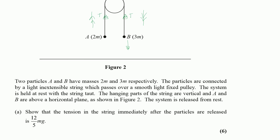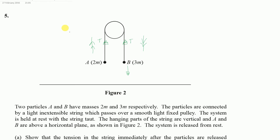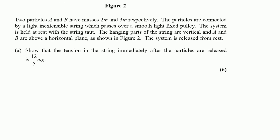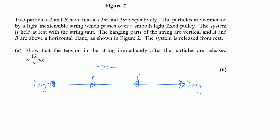For the first part we're asked to show that the tension in the string immediately after the particle is released is 12/5 mg. My preferred method is to flatten out the system — moving each side across the top — so what we end up with is a flat system where we're being pulled in one direction by 3mg and the other by 2mg. I label the tensions and the direction of acceleration.